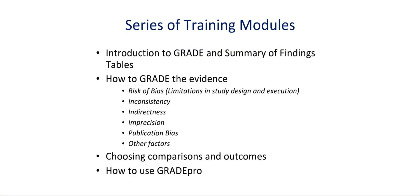This module is part of a series of training modules that provide an introduction to GRADE and summary of findings tables, how to grade the quality of a body of evidence, including modules on the risk of bias or limitations in study design and execution, inconsistency, indirectness, imprecision, publication bias, and other factors that may lead to upgrading the quality of evidence. Modules will also deal with choosing comparisons and outcomes and how to use the GRADE Profiler software, also called GradePro.